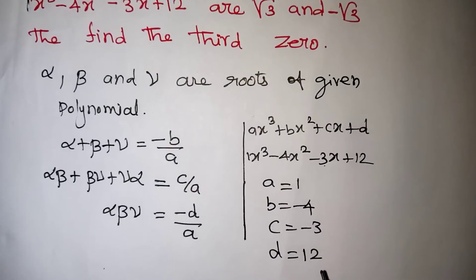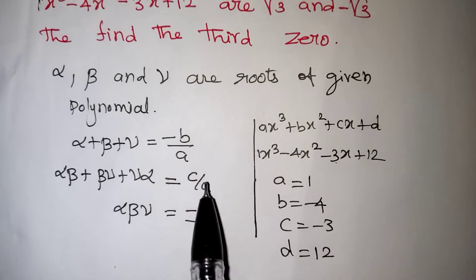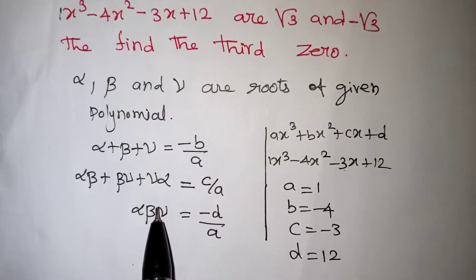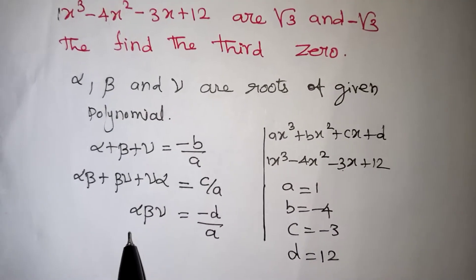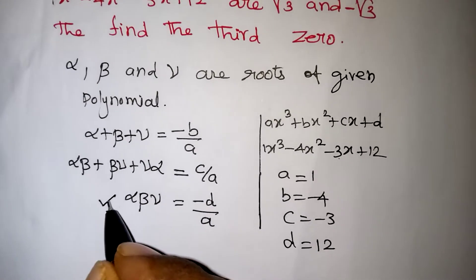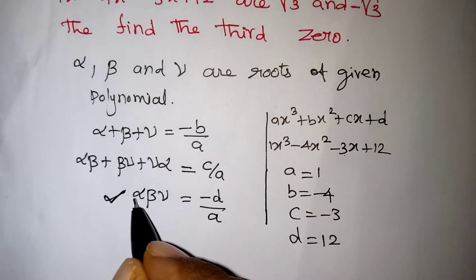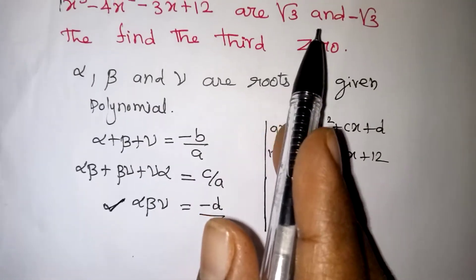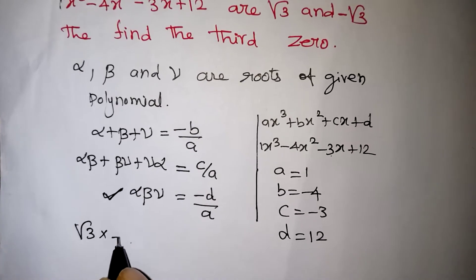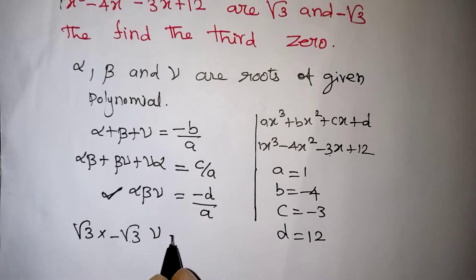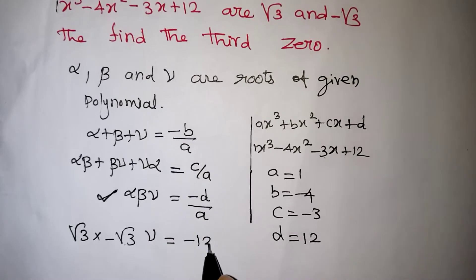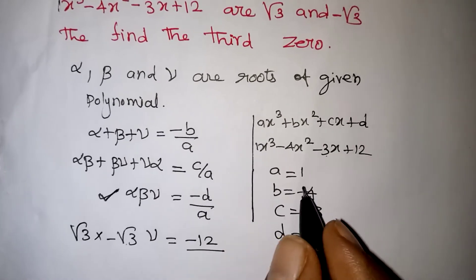We only need to find one more zero, so we can use any of the three conditions. Using the last formula — product of all roots — is the simplest. Alpha is given as root 3, beta is minus root 3, so: root 3 × (minus root 3) × gamma = minus d by a. Here d is 12, so that equals minus 12, and a = 1.